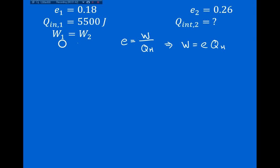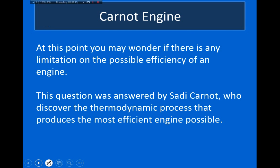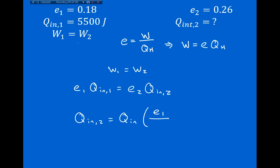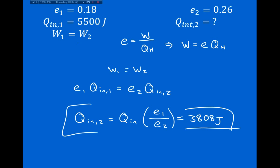Since the work done by engine 1 equals the work done by engine 2, we have W1 equals W2, so the efficiency of engine 1 times the heat into engine 1 equals the efficiency of engine 2 times the heat into engine 2. Solving for the heat into engine 2, it equals the heat into engine 1 times the efficiency of engine 1 divided by the efficiency of engine 2. Plugging in the numbers, the heat into engine 2 is 3,808 joules. This makes sense — engine 2 is more efficient at 26% versus 18%, so it requires less input heat.